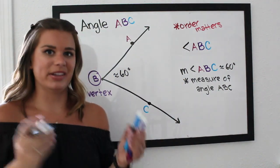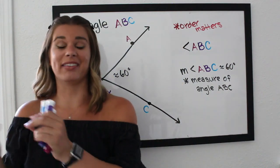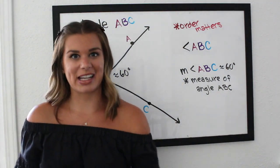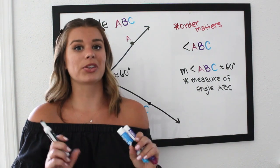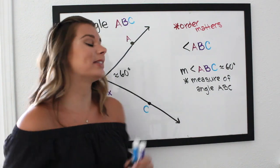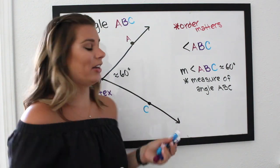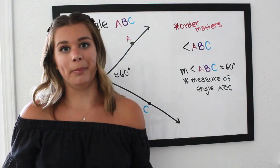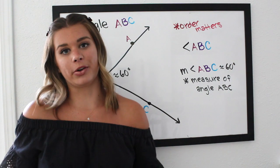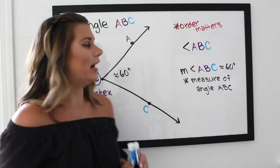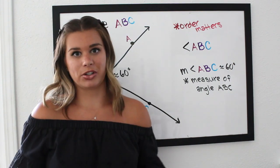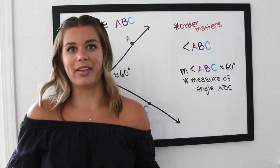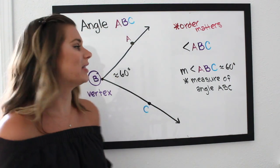The notations for angle vs. measure of angle — similar to segment vs. length of segment — are probably the ones that get confused the most throughout this course. If you have any questions, make sure to reach out specifically about those.